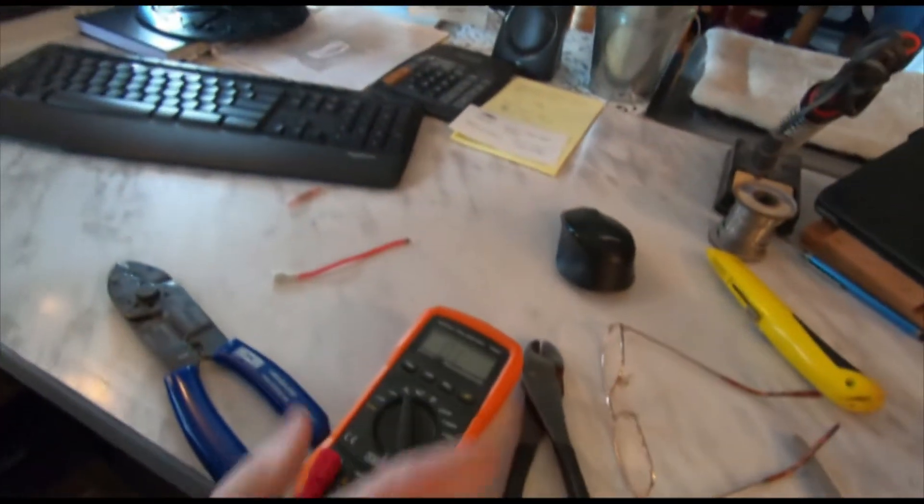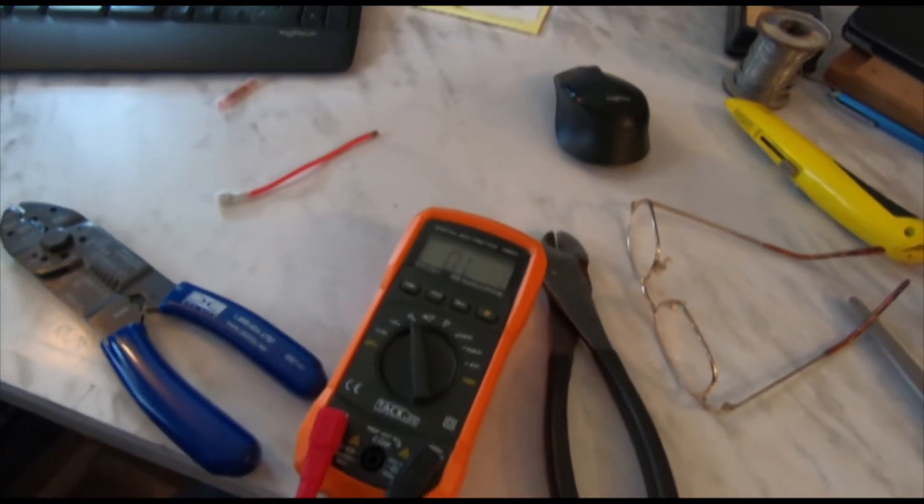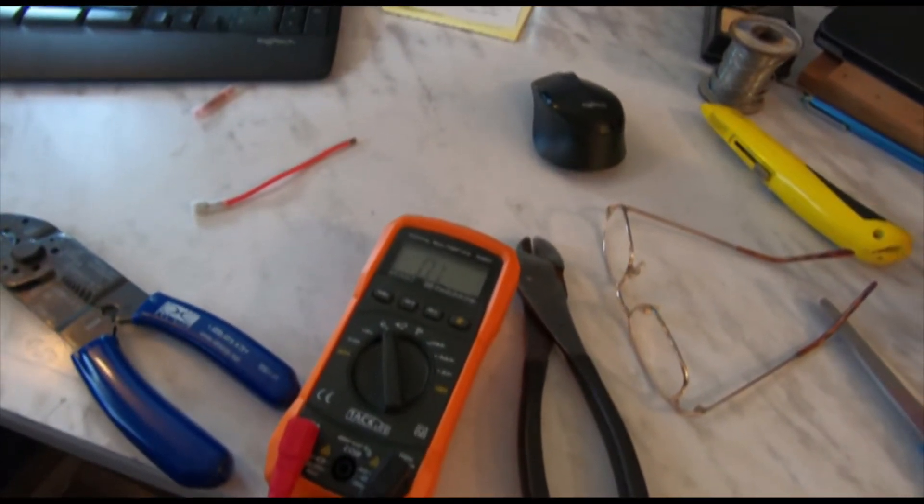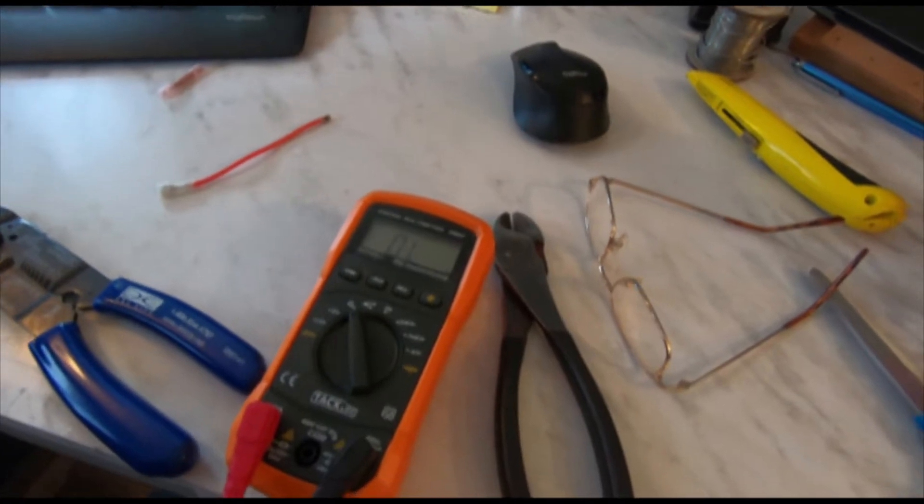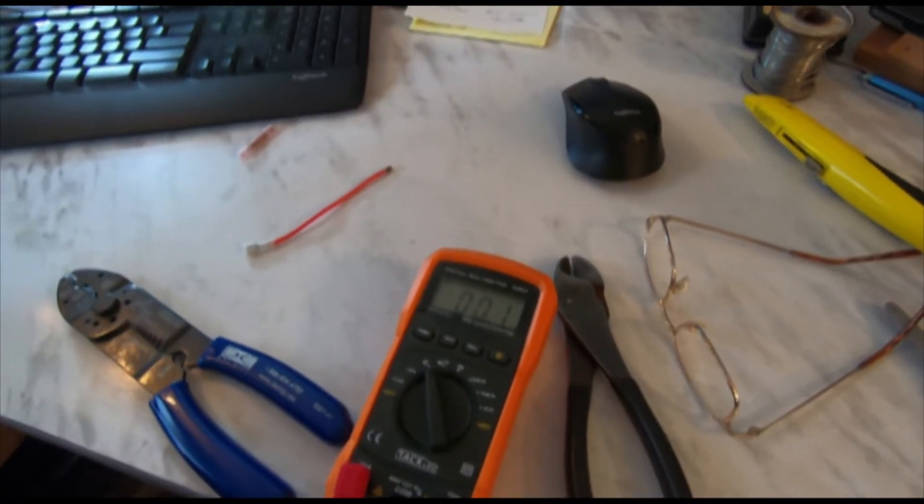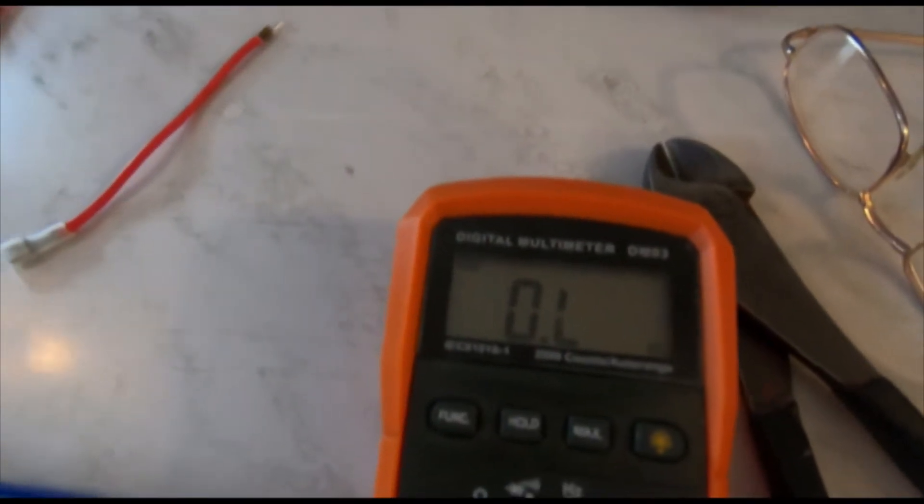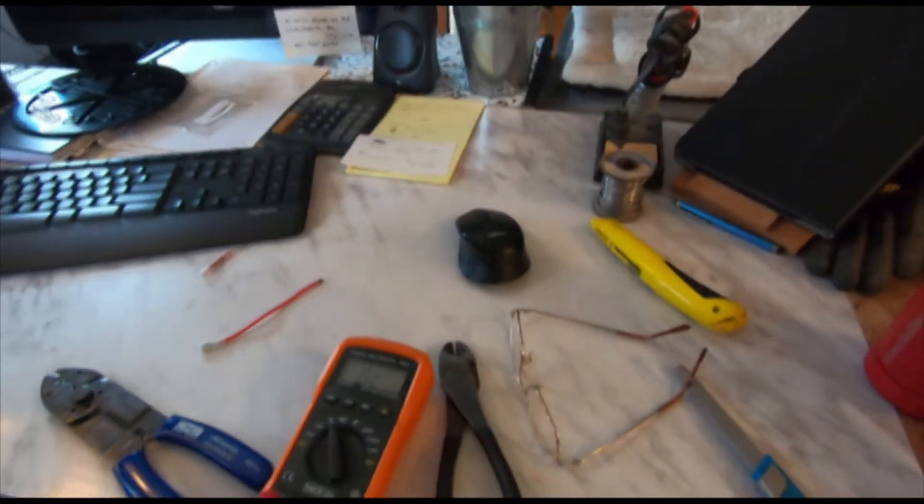And what it'll do is give you a reading. So you go to, see it reads zero. Now if this is open or if this fuse is blown, you won't, you'll get the same, it'll still say zero. But see how it's shifted there? That's your resistance to that fuse.